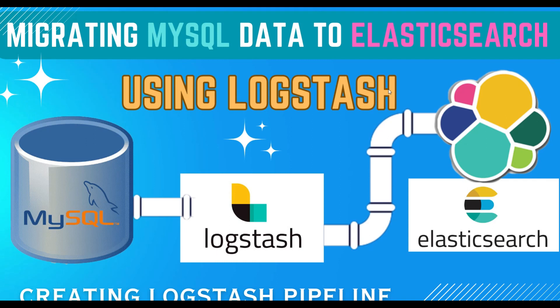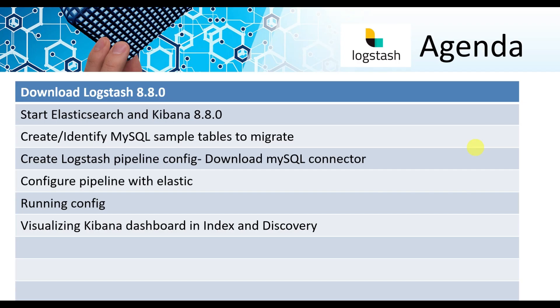Welcome to Simplifying Tech Programming. In today's session we are going to check how we can migrate SQL data to NoSQL data — that means we are going to demonstrate how we can transfer or migrate data from MySQL tables to an Elasticsearch index by using Logstash pipelines. There is often a requirement where we have to migrate our database to a NoSQL or faster database, and for that we can use the ELK stack to convert MySQL table data into Elasticsearch index data.